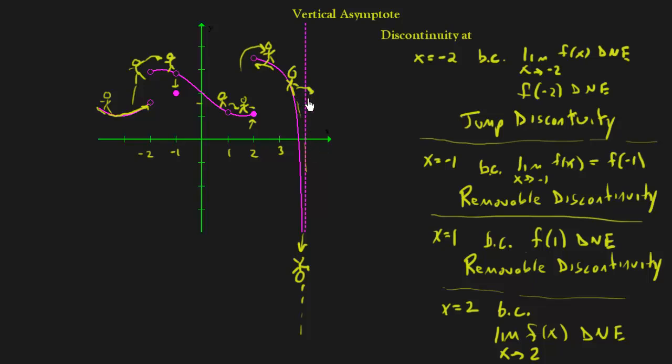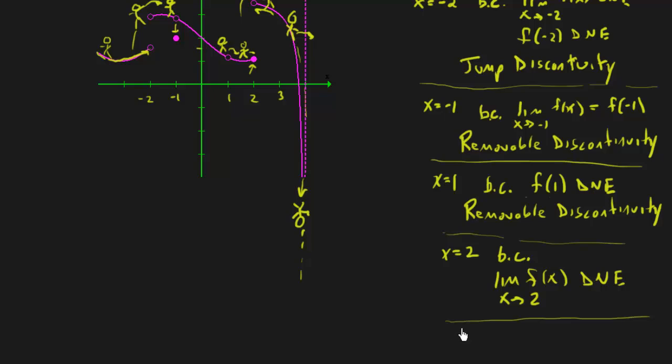But this one has a special name. So down here I'm going to say that we have a discontinuity at 4, and it's because of a similar reason, the limit doesn't exist. But it doesn't exist for a slightly different reason. It doesn't exist because it's infinity, or in this case, negative infinity.